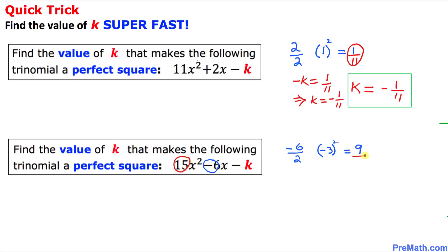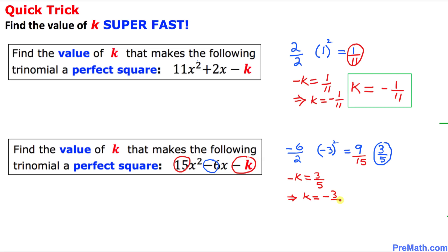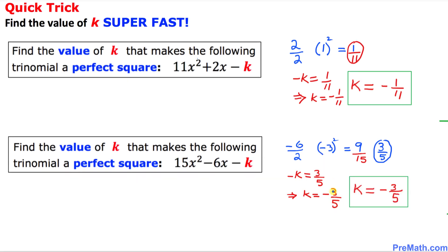We are going to divide 9 by 15, and reduce: 9 over 15 can be written as 3 fifths. Now, keeping in mind that we have negative k in this trinomial, we set negative k equal to 3 over 5. That means k is simply negative 3 fifths.